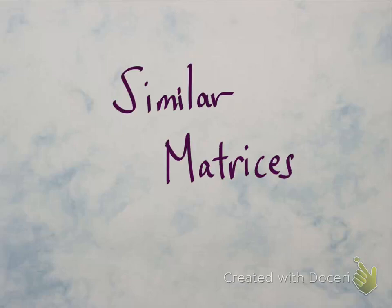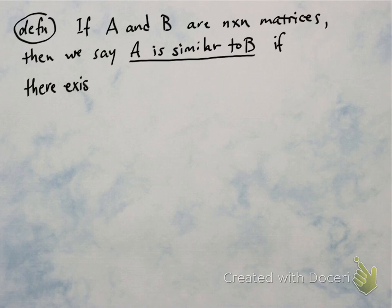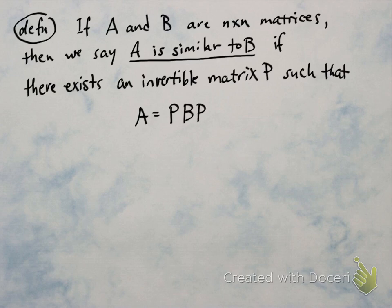Let's talk about similar matrices. So first, a definition. Two matrices A and B, suppose they're square matrices. A is said to be similar to B if there's an invertible matrix P that has the property that A is equal to P times B times P inverse.